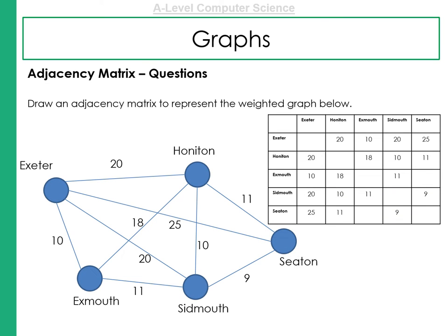Here's an example of a question that you might face in the exam. Draw an adjacency matrix to represent the weighted graph below. Now, first of all, we have to figure out what type of graph it is. Is it a weighted graph? Is it a directional graph? And you can see it's a weighted graph. So we have to have all the different vertices down one side, and we repeat those across the top. Then, we need to complete the different parts of the adjacency matrix.